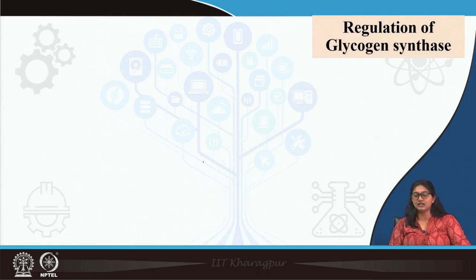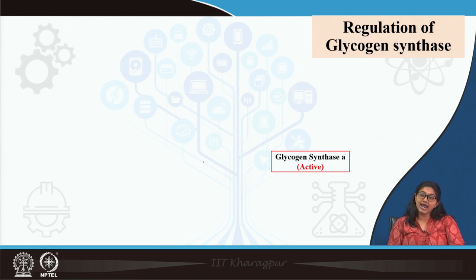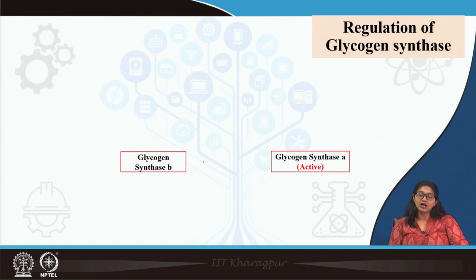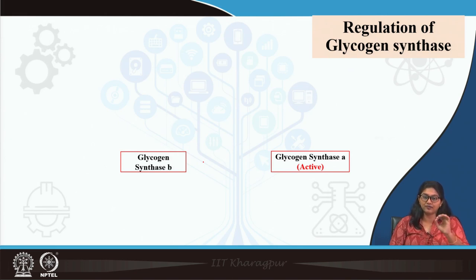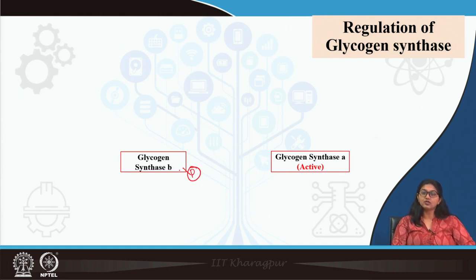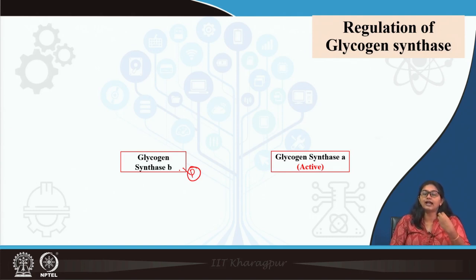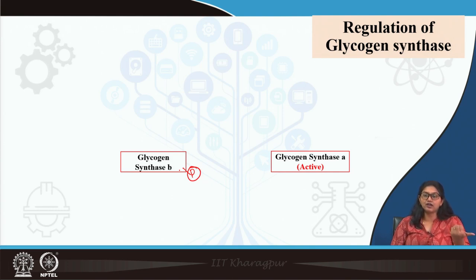There are two forms of glycogen synthase present inside the cell. Glycogen synthase A is the active form; glycogen synthase B is the inactive form. But unlike glycogen phosphorylase — where the active form is the phosphorylated form — here it is the opposite. The active form of glycogen synthase is the unphosphorylated or dephosphorylated form, and the inactive form is the phosphorylated one.